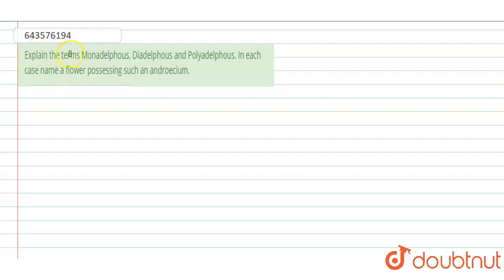They are asking to explain the terms monadelphous, diadelphous, and polyadelphous. In each case, name a flower possessing such an androecium. So let's understand the male part or androecium.